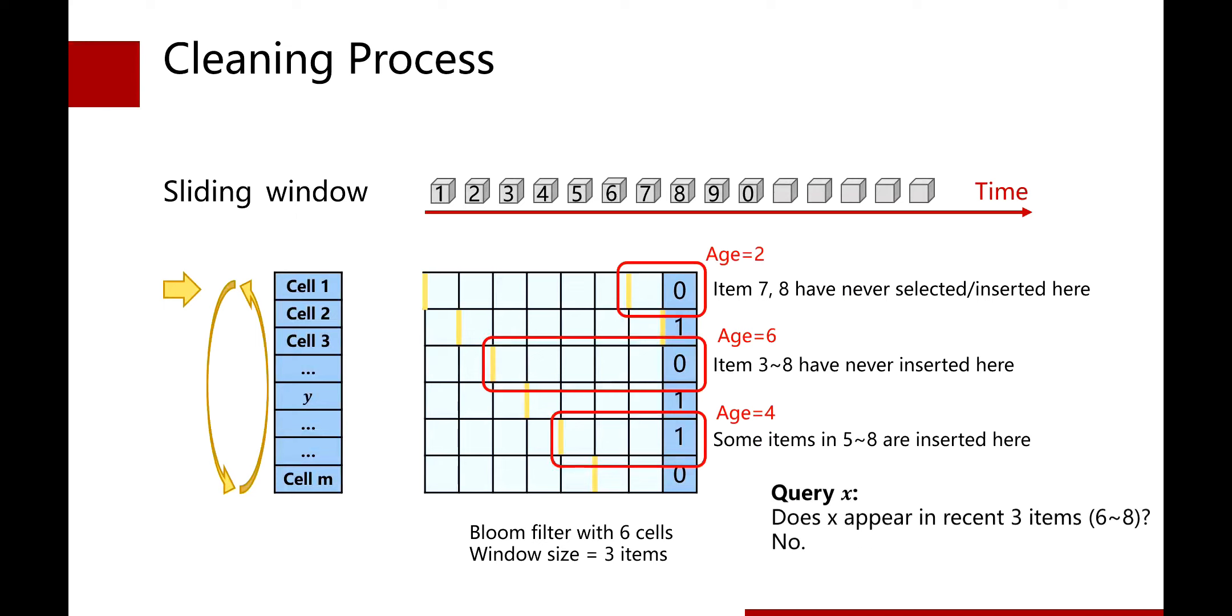When the user queries an item X, we calculate its hash values and select the first, third, and fifth cells. For the third cell, we know that no item in three to eight inserted. Therefore, item X must never appear in the sliding window, which is item six to eight.